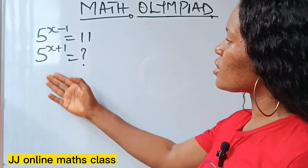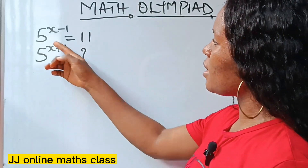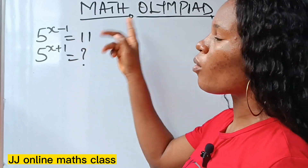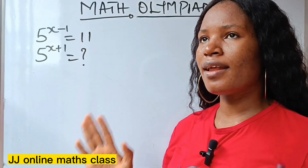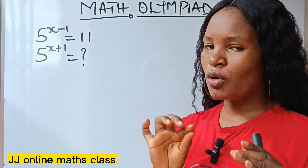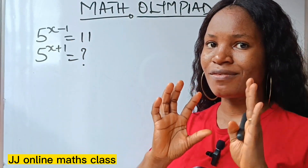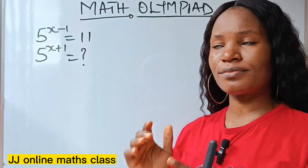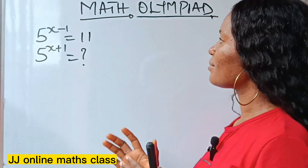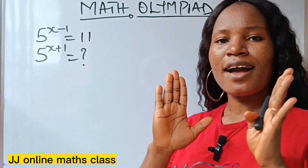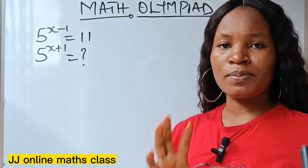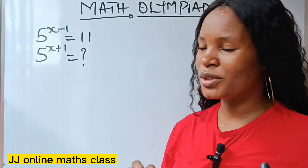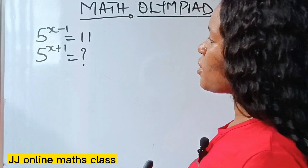We are told to solve for this: if 5 to the power of x minus 1 equals 11. I'm going to explain this in detail, so stick with me and you are going to enjoy it.